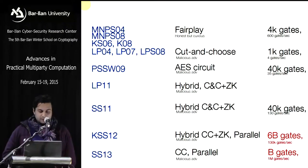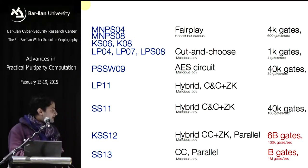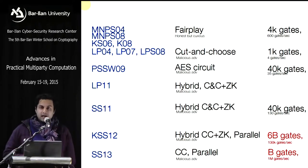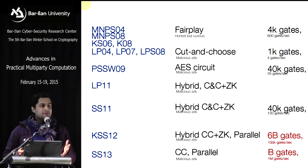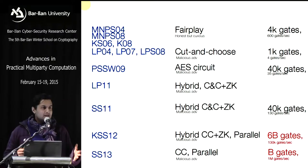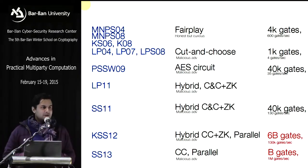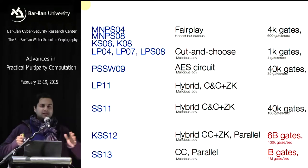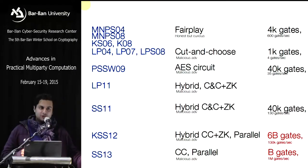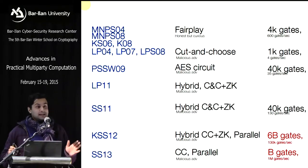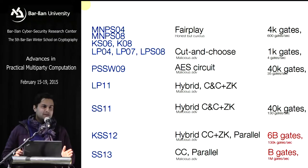The best performance I've achieved without GPUs is roughly a million gates per second in the malicious-secure model. For context, the PC Junior of 1980 ran on an 8086 processor at about 1 MHz — one can think of secure computation as equivalent to 1980-era computation. We launched the shuttle and landed on the moon with computers less powerful than that PC Junior, so interesting things are achievable — like stable matching.